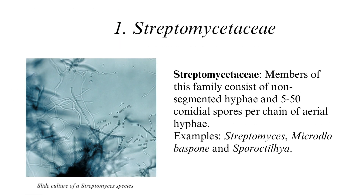Actinomycetes are classified into seven families based on hyphal and reproductive structures. The first family is Streptomycetaceae: members consist of non-segmented hyphae and 5 to 50 conidial spores per chain of aerial hyphae. Examples are Streptomyces, Microellobosporia, and Sporichthya.